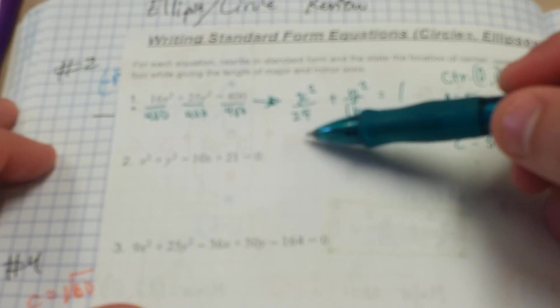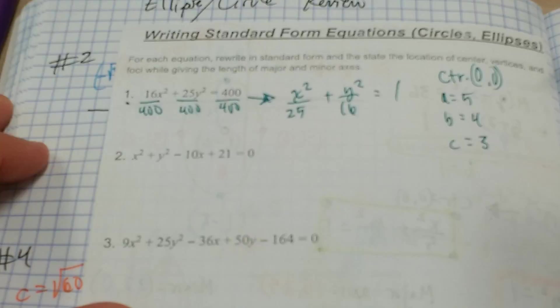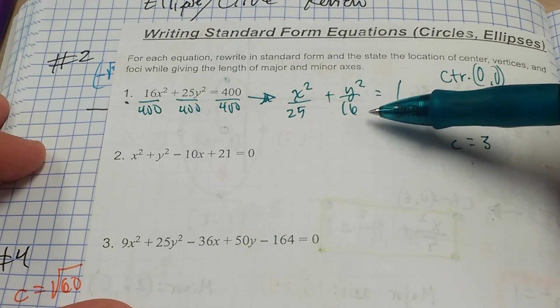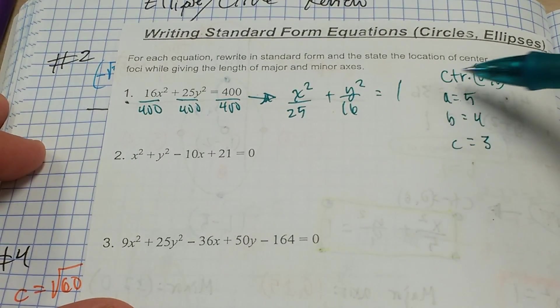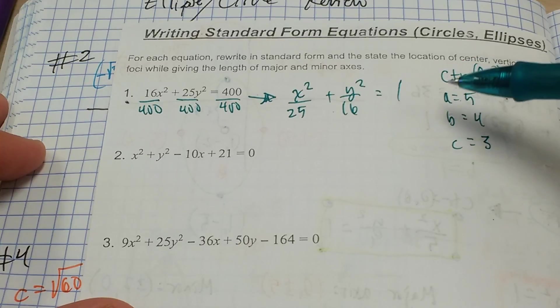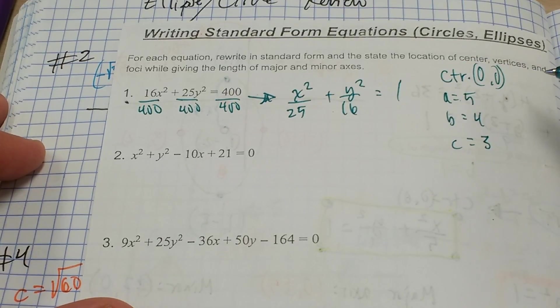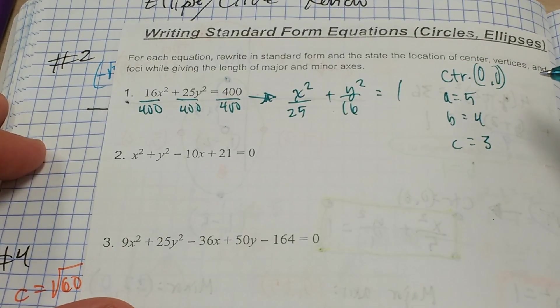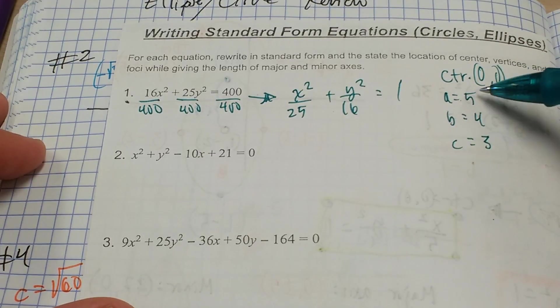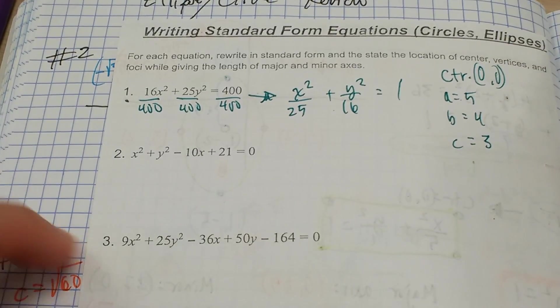Then we've got our standard form. Like I said, I would show you the graph later on. It'll be much more of an illustration to show us where our center, vertices, and foci are, as well as the length of the major and minor axes. Axis is 2 times the radius. So these values are our radius values.